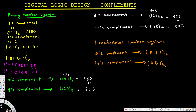Now let's look at the hexadecimal number system. For fifteenth complement, we put fifteen-fifteen-fifteen and subtract. Fifteen minus one is fourteen. In hexadecimal, after nine we have A, B, C, D, E, F — so fourteen is E. Therefore fifteen minus one gives us E.